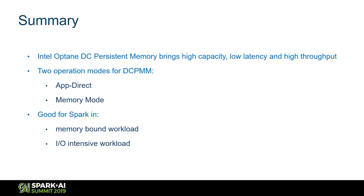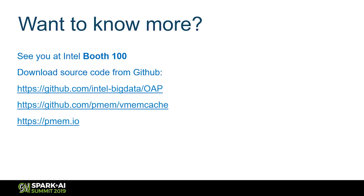In summary, the Optane DC Persistent Memory brings high capacity, low latency, and high throughput. Two operation modes are supported: App Direct Mode and Memory Mode. For Spark, we gain very large memory capacity and address IO-intensive workloads. All the code mentioned is open source and available on GitHub. You can also check the pmem.io website for more information. Thank you — any questions?